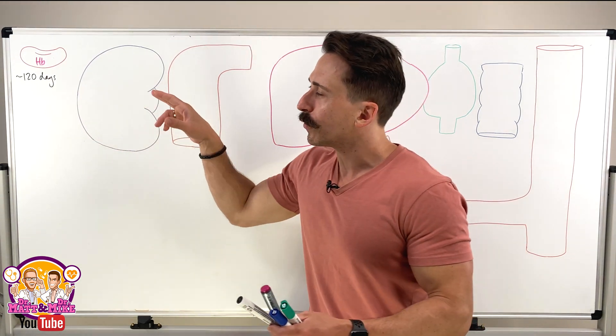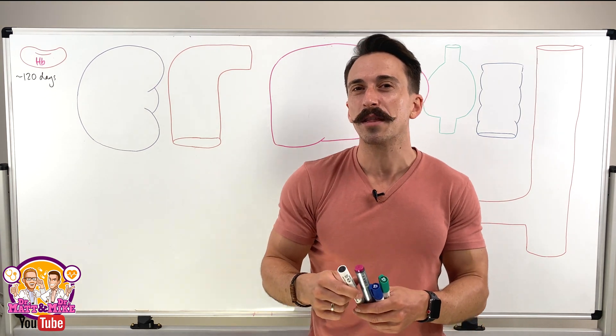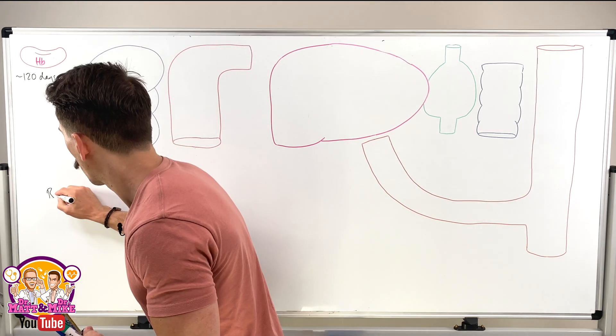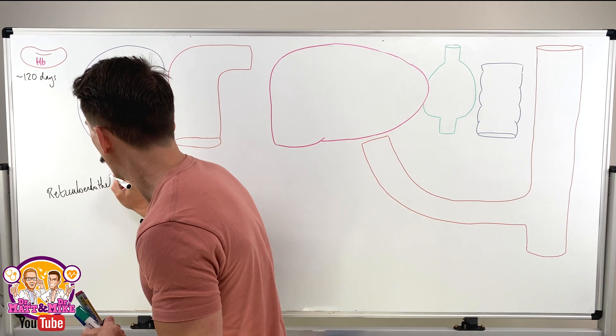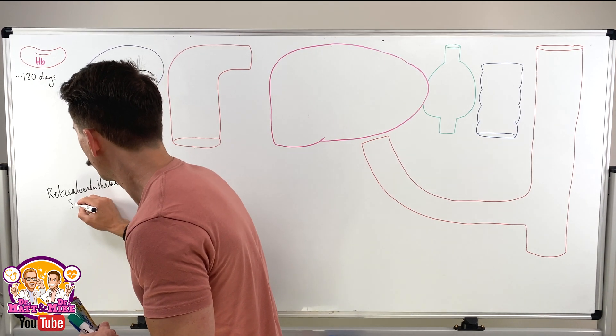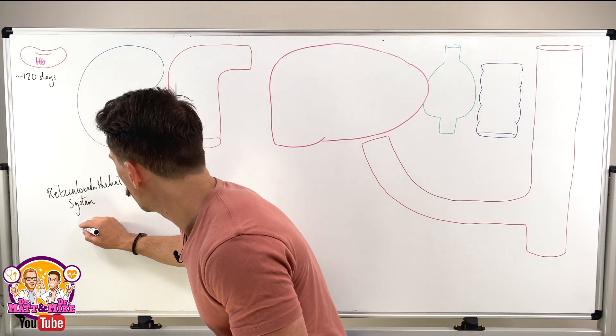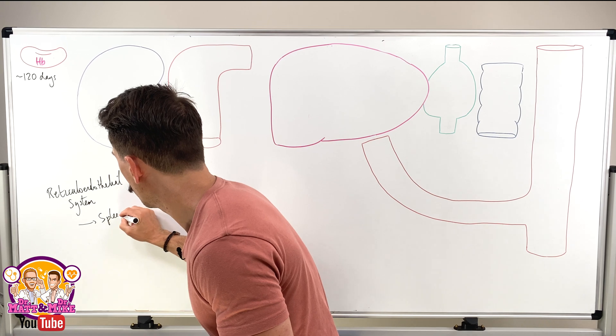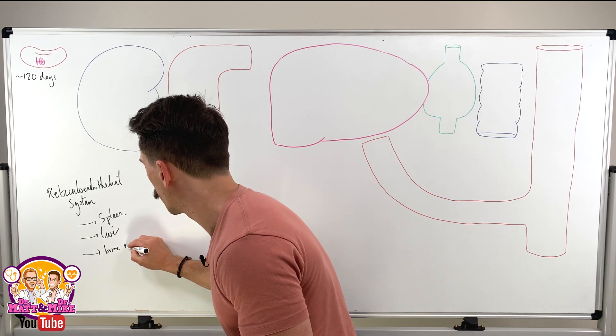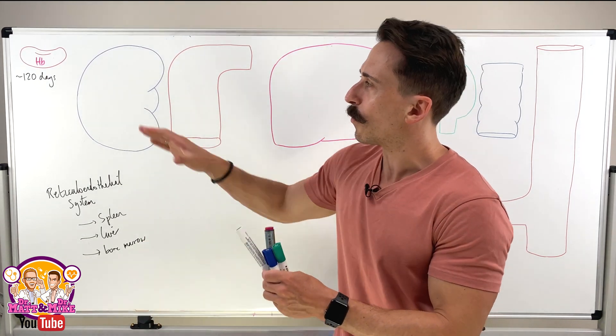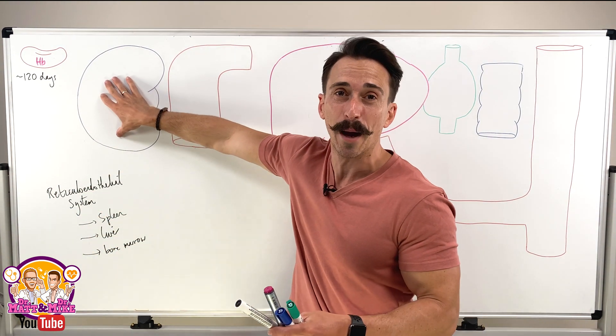So when it goes through very specific blood vessels that we call reticuloendothelial systems, these are blood vessels found within the spleen, predominantly, the liver, and the bone marrow. After around about 120 days, when our red blood cells are misshapen and they move through these reticuloendothelial systems, I've drawn the spleen up here, something happens.